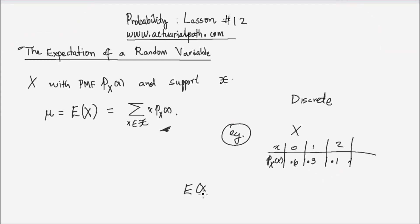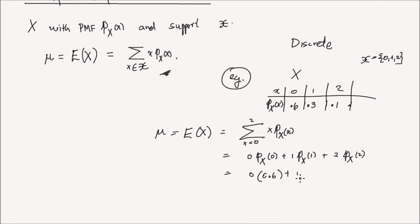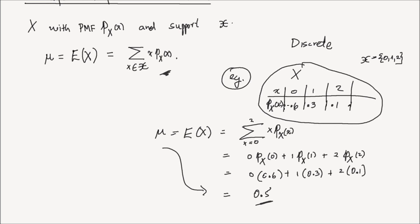The expectation of that random variable, or mu, is the sum over all the support — the set {0, 1, 2} — of x times P_x(x). Plugging in: 0 times P(x=0) plus 1 times P(x=1) plus 2 times P(x=2), which is 0 times 0.6 plus 1 times 0.3 plus 2 times 0.1, and that equals 0.5. So the average value taken by the random variable x, described by that PMF, is 0.5.